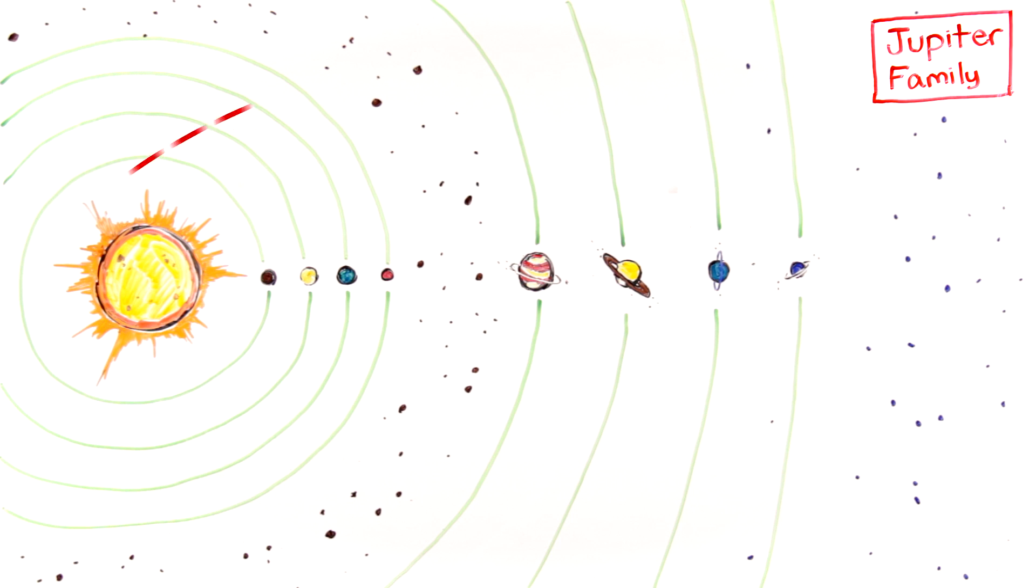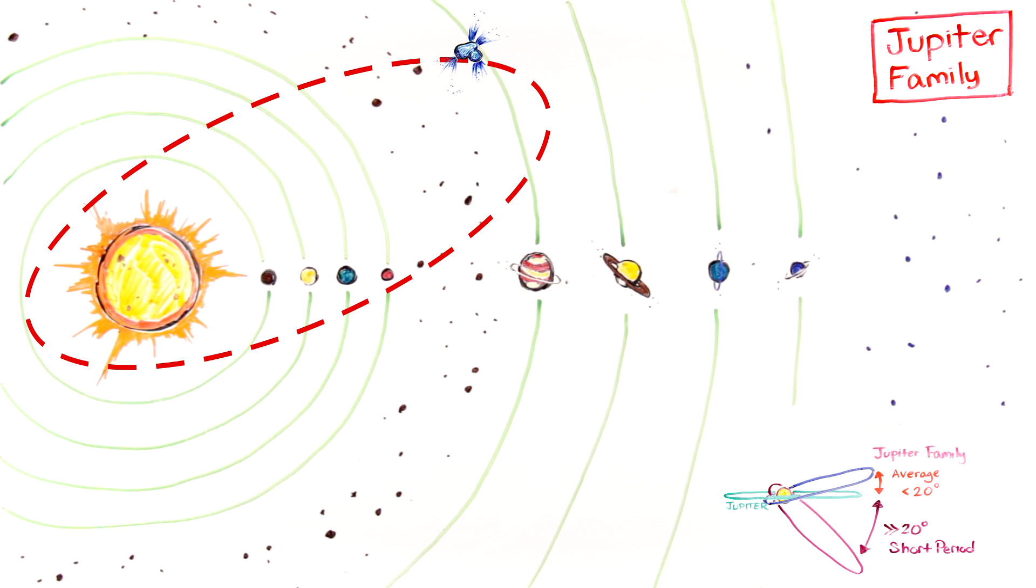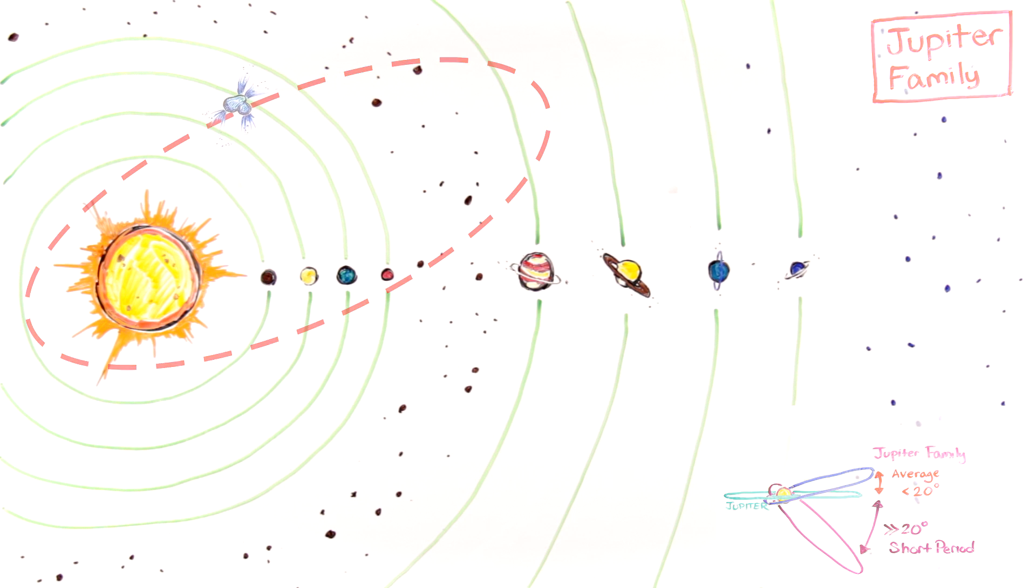Jupiter family comets are a subset of short period comets, with orbital periods of less than 20 years. Unlike short and long period comets, they also have low inclinations, typically less than 20 degrees from the plane of the solar system. Jupiter controls the orbits of these comets, due to its massive gravity and their proximity to the giant planet.